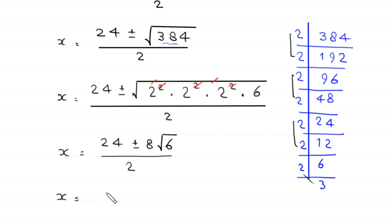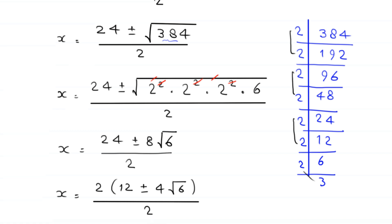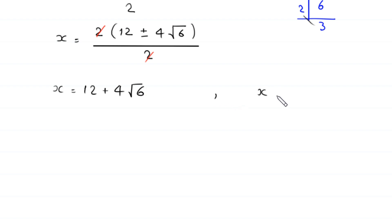So x equals 24 plus or minus 8 root 6, divided by 2. Factoring 2 from the numerator gives 2 times (12 plus or minus 4 root 6), divided by 2. This gives us two values: x equals 12 plus 4 root 6, and x equals 12 minus 4 root 6.